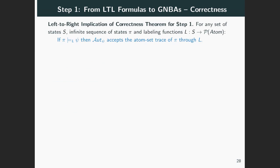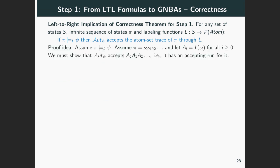We must prove an equivalence, an if and only if statement. First, we prove the left to right part of this equivalence. So let's assume that π satisfies ψ. Let's say the trace π consists of the states S₀, S₁, and so on. And let, for each i, Aᵢ denote the labeling of state Sᵢ. We need to show that Aut_ψ accepts A₀, A₁, and so on. So we must find an accepting run for it.